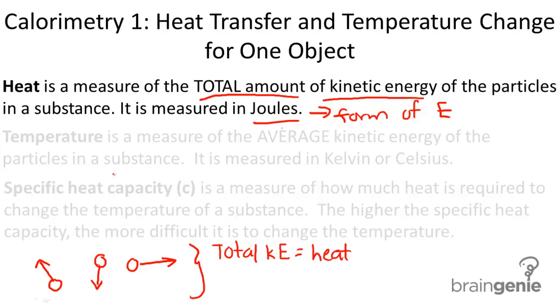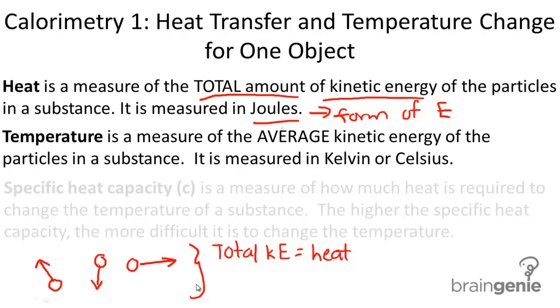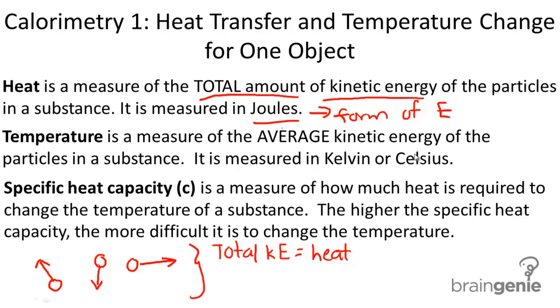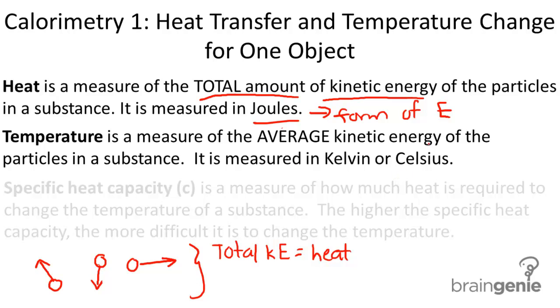Now, let's look at a different term. The next term is temperature. Temperature is a measure of the average kinetic energy of the particles in a substance, and it's measured in Kelvin or degrees Celsius. Commonly, we think of it in the United States as being measured in Fahrenheit.